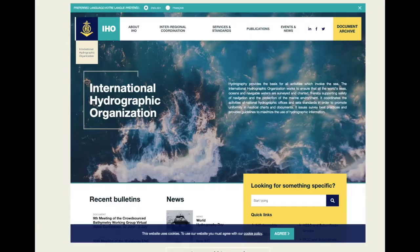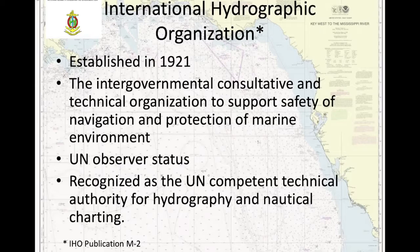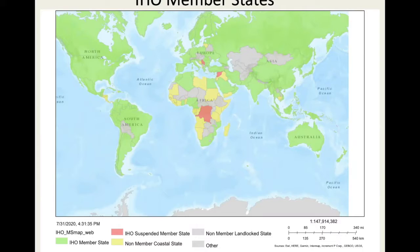The International Hydrographic Organization sets the standards for hydrographic surveying, along with the International Federation of Surveyors and the International Cartographic Organization. Established in 1921, it's an intergovernmental consultative and technical organization to support safety of navigation and protection of the marine environment, with UN observer status and recognition as the UN's competent technical authority for hydrography and nautical charting. In the Gulf of Guinea, the members are Ghana (which joined in 2019), Nigeria, and Cameroon.